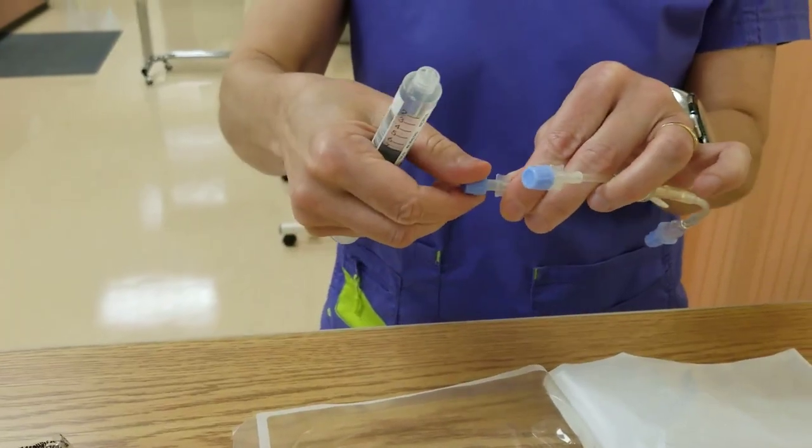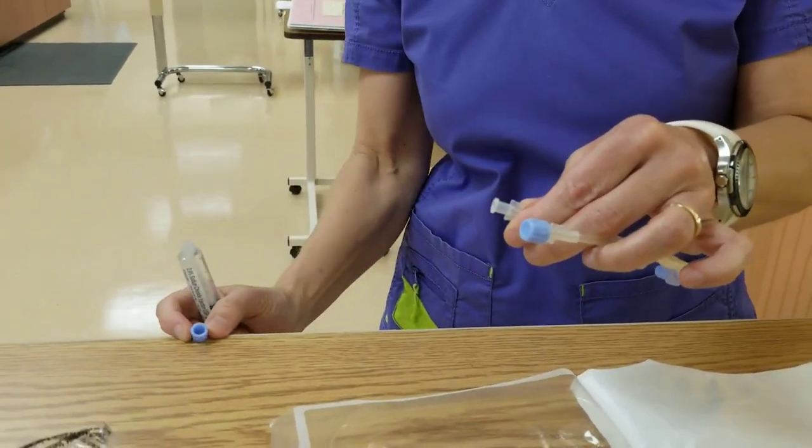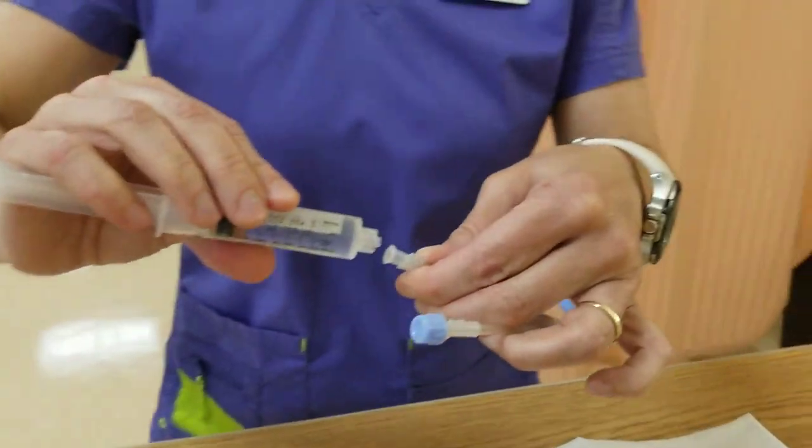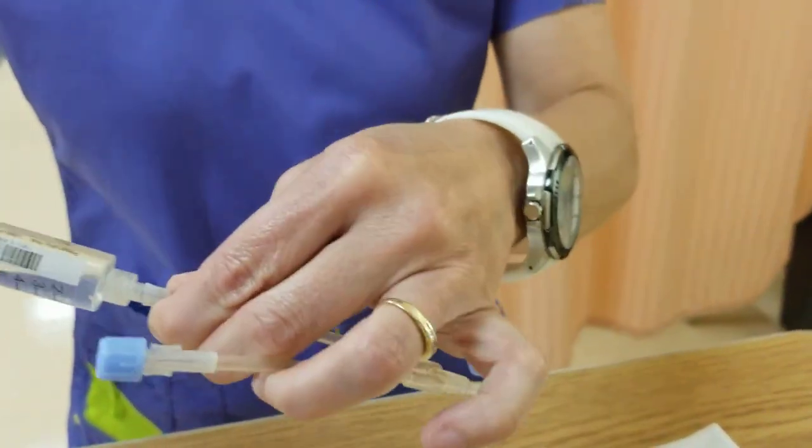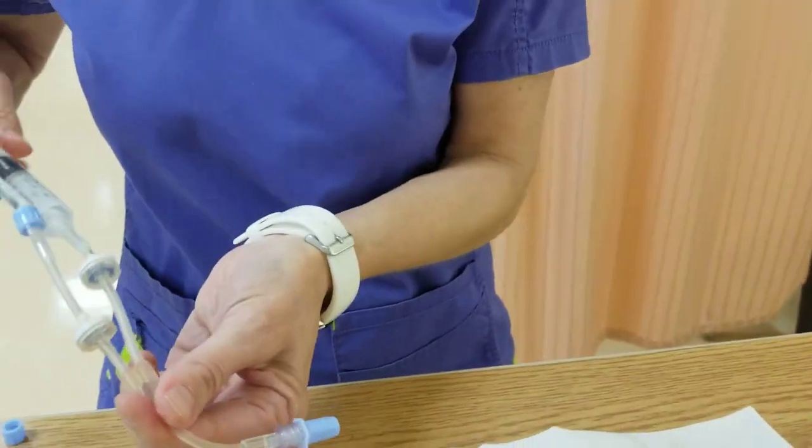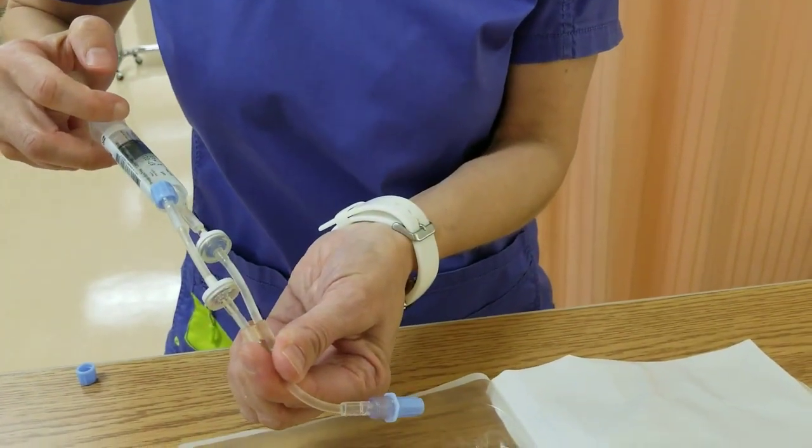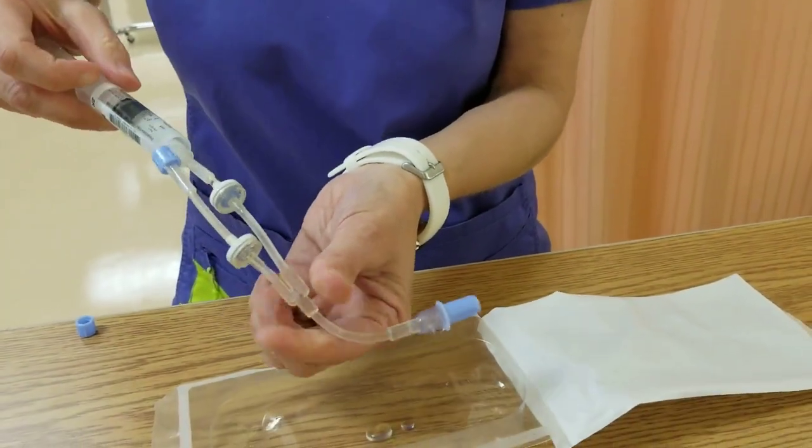I need to maintain sterility of the caps, so I'm going to just put it down there. I don't even need an alcohol swab because it's a lure attachment. And then I'll just flush it. And to me, this is quite handy to have this right here.